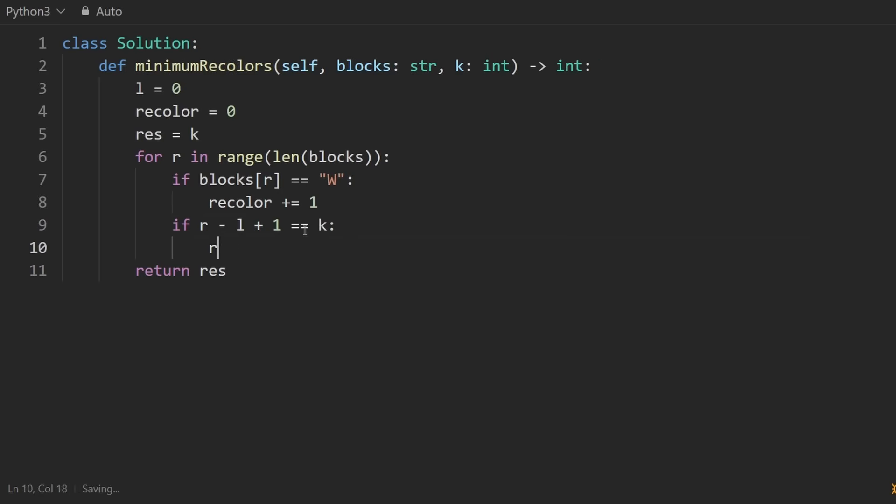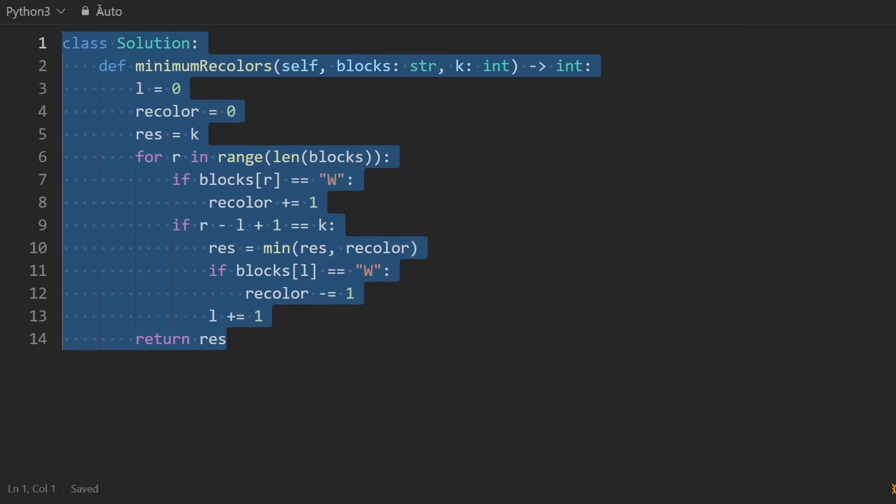We will update our result, try to minimize it with recolor, and also shift the left pointer. So I want to do this left plus one, but before we do that, let's check if the character at the left pointer is white. Then we should probably decrement the number of recolors. So that's the entire code.